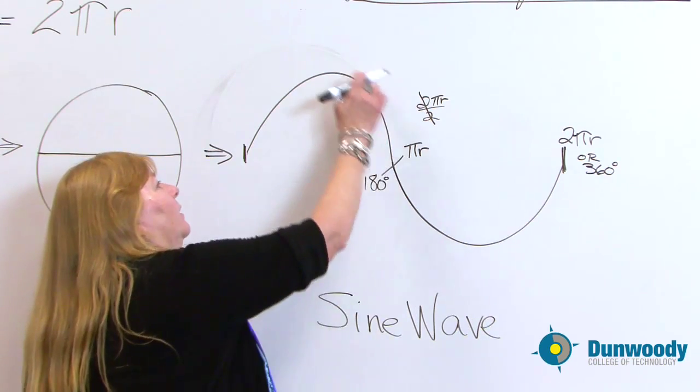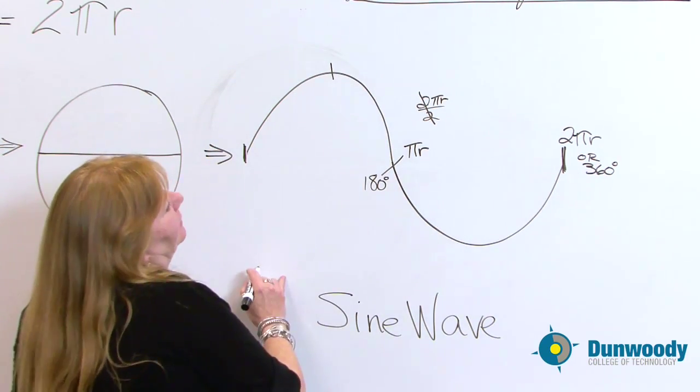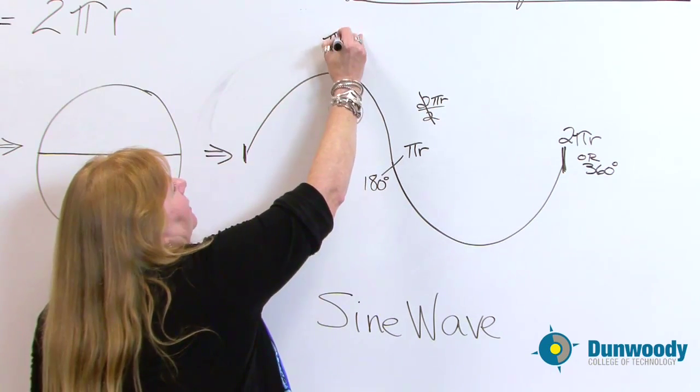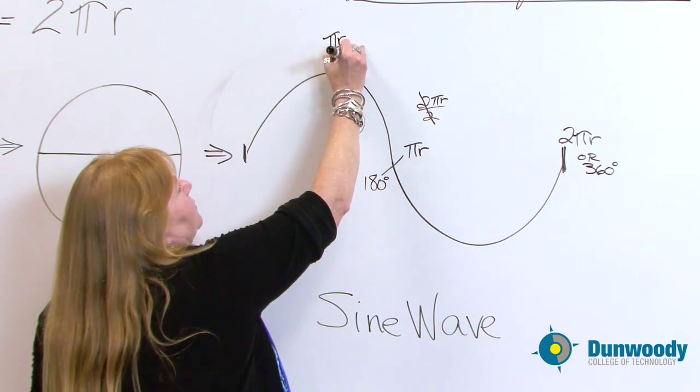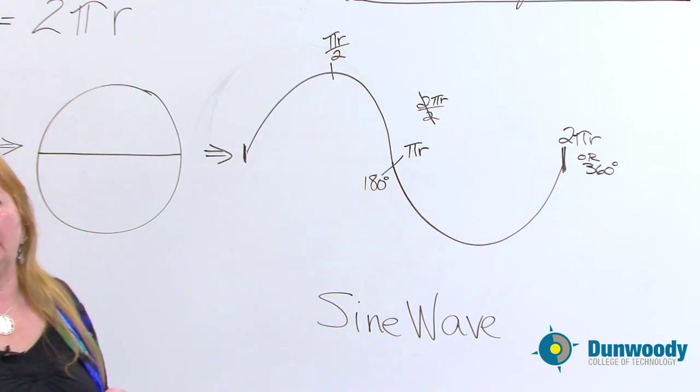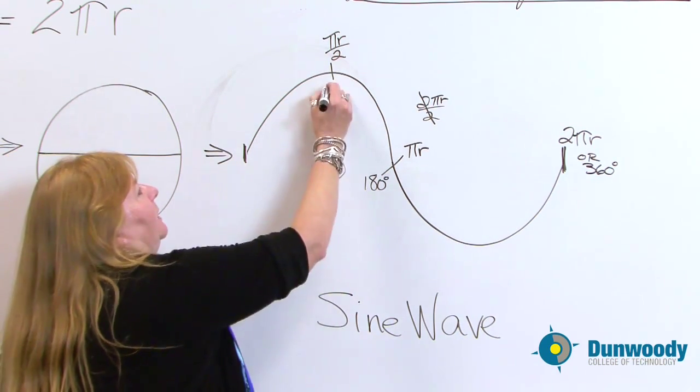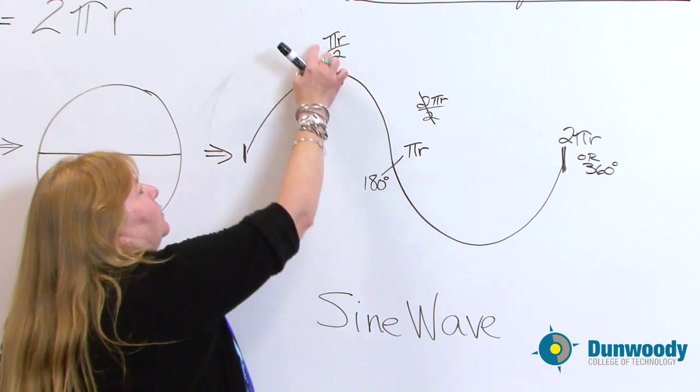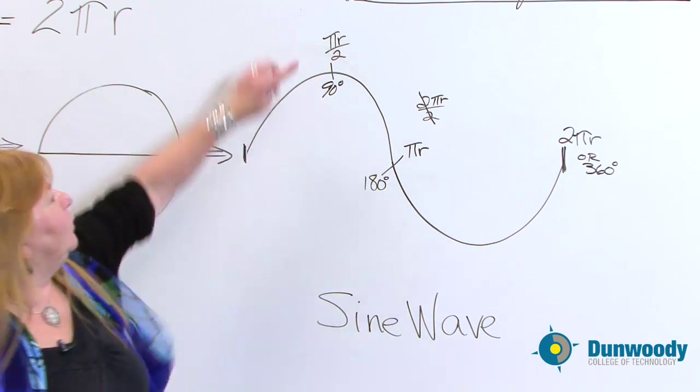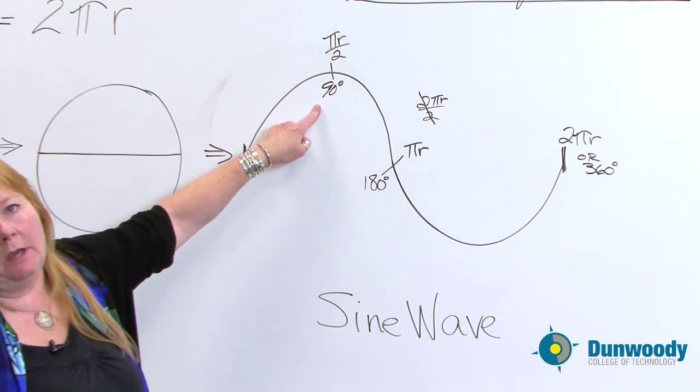Coming up here, half of πr is right up here. And half of πr is written this way. That's half of πr, πr cut in half. Down below, what's half of 180? 90 degrees. So these are two different ways to say the same thing. One in radian measure, one in degree measure.